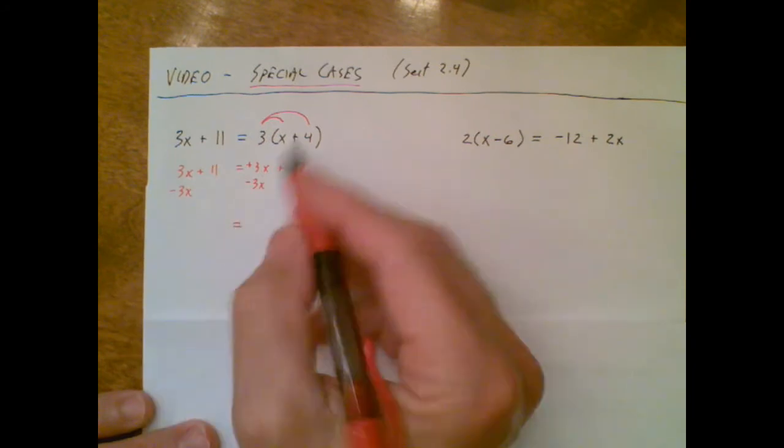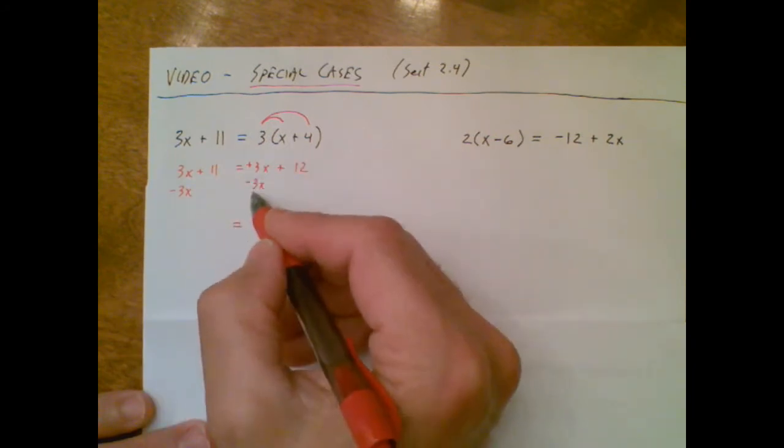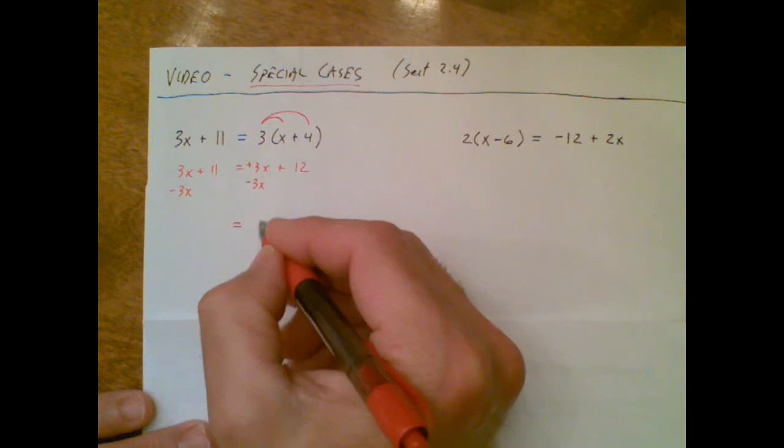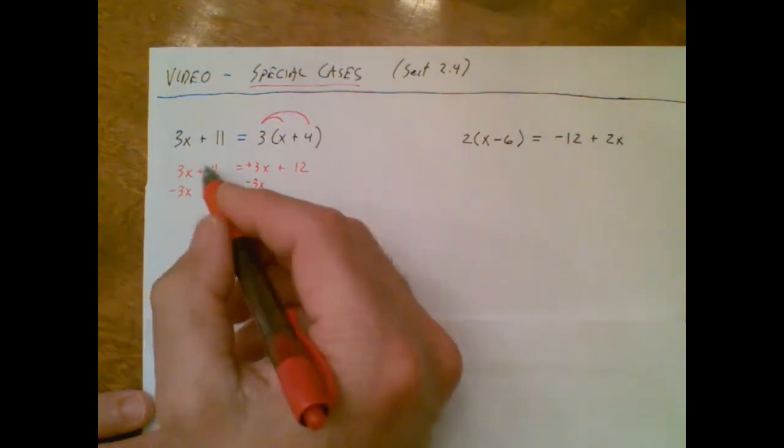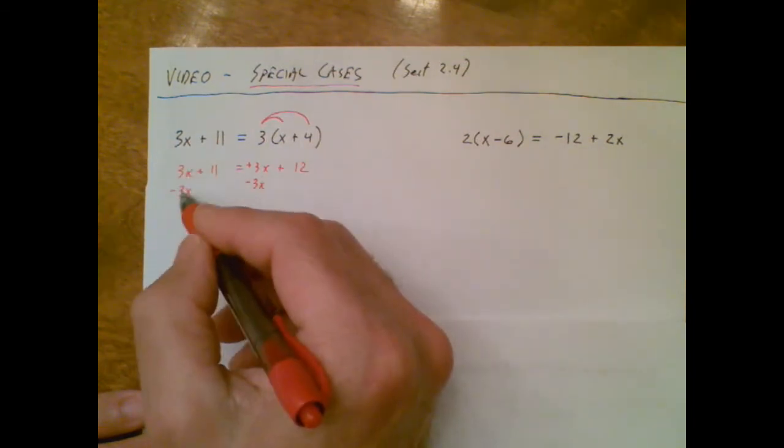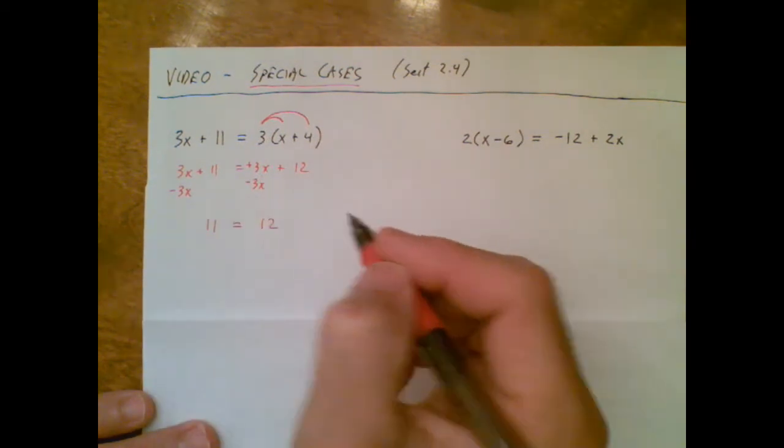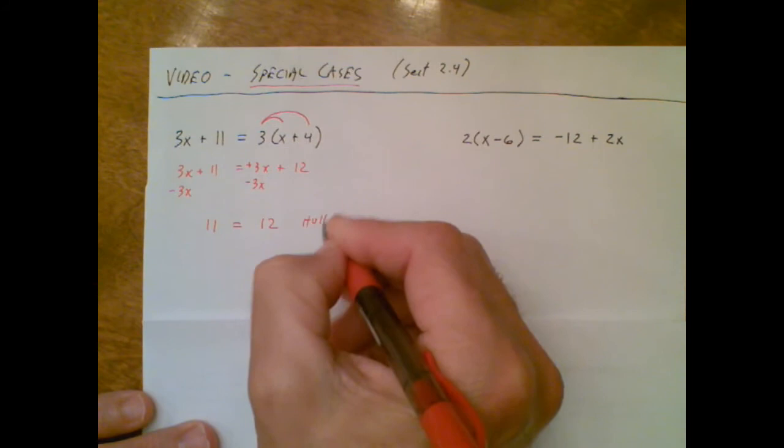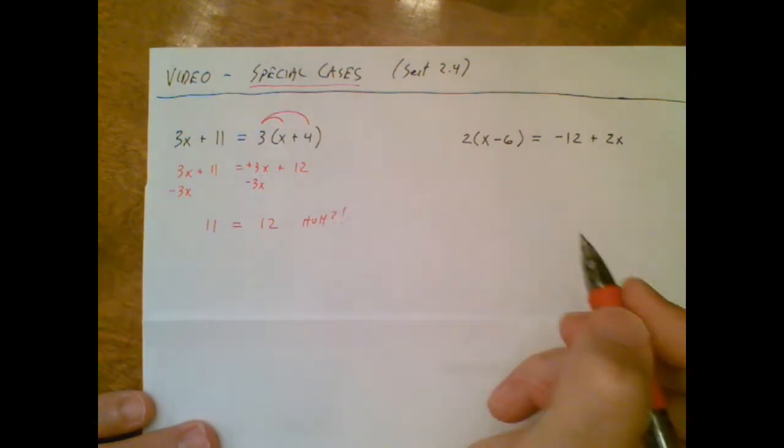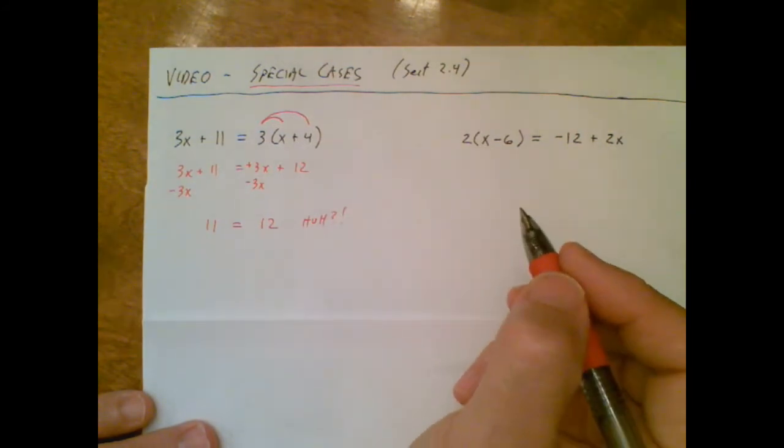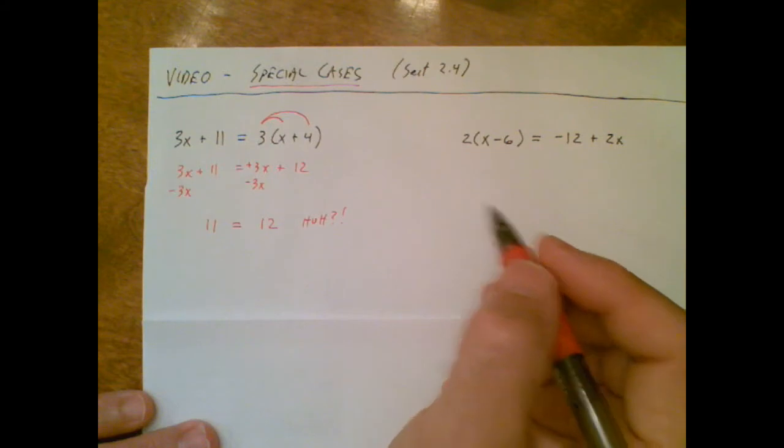3x minus 3x is 0, so on this side I'm left with only 12. 3x minus 3x is 0 on this side, I'm left with only 11. Huh, what just happened? This has never happened before. The variable has disappeared, the variable has left the building.